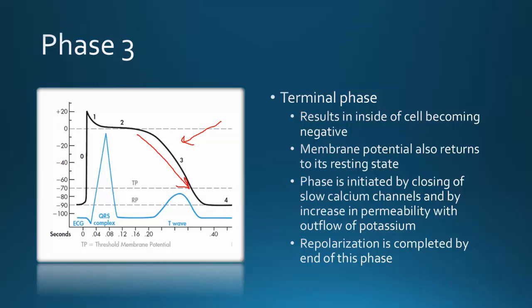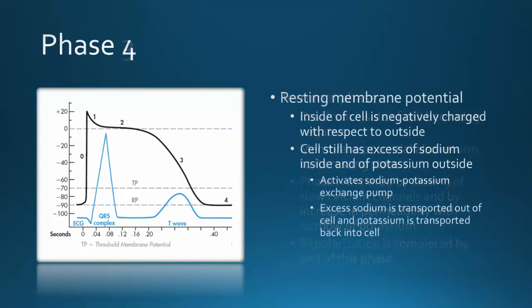Phase four is the resting membrane potential — the time when the cell is trying to rest. The cell still has an excess of sodium inside and potassium outside, so the sodium-potassium pump must be activated to restore the balance.